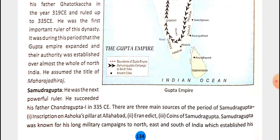The second source is writings and books from Iran, also known in reference to Samudragupta. The third source is the coins of Samudragupta. From these coins we can also learn about the administration and social conditions of his period. So the three sources are: inscriptions on Ashoka's pillar at Allahabad, Iranian writings, and the coins of Samudragupta.